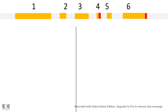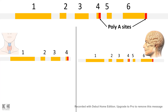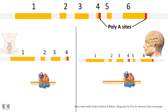Alternative polyadenylation site choice is an important strategy used by the cell to create different proteins. For example, an mRNA encoded from DNA has six exons. In different tissues — say the thyroid gland versus the brain — different polyadenylation sites are used. As a result, different lengths of mRNA are produced: in the thyroid only four exons are included producing calcitonin, while in the brain all six exons are included producing CGRP peptide. This demonstrates the huge physiological significance of polyadenylation site choice.